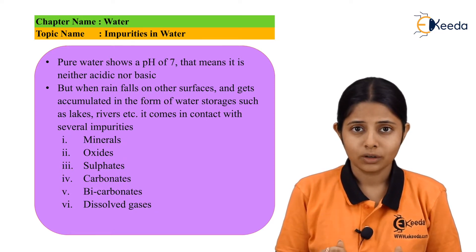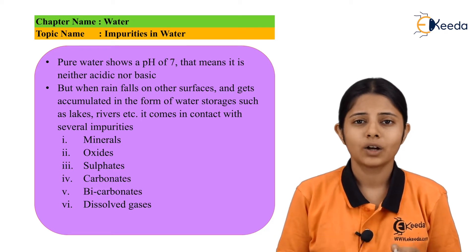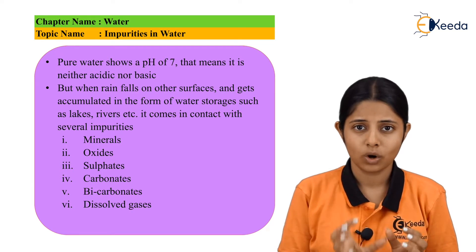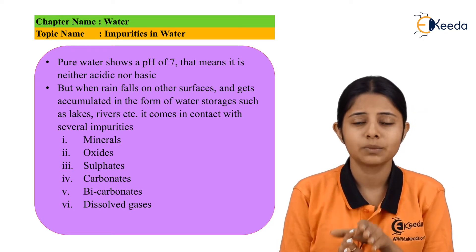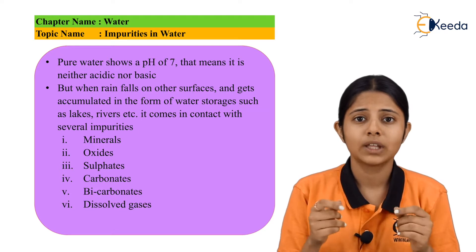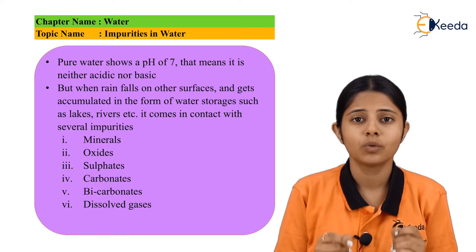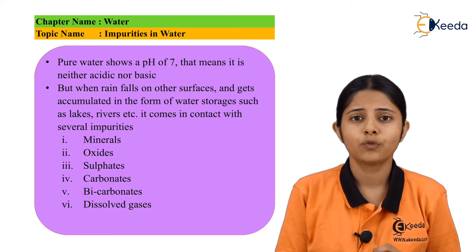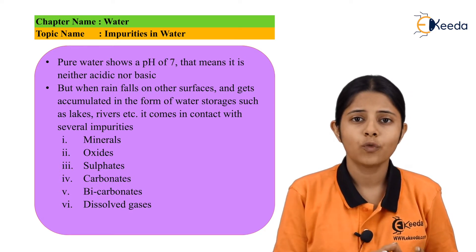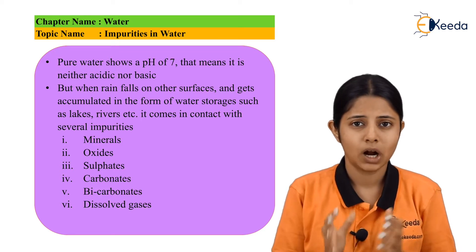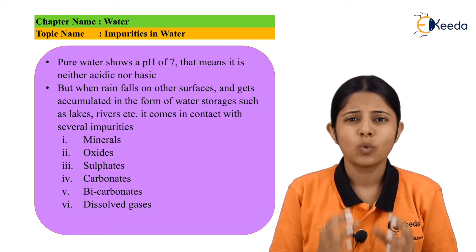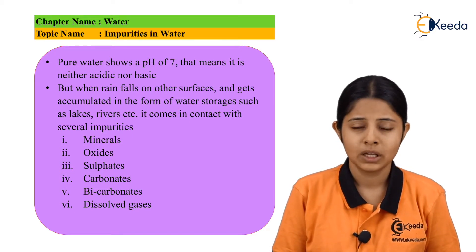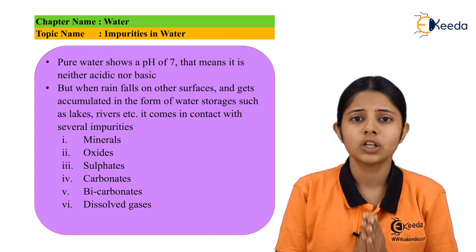This impure water can also be termed as hard water. Now what exactly is hard water? Hard water is water which contains impurities and minerals, and because of those minerals, the properties of the water change. One of the most important properties that changes is the foaming of soap. Soft water foams up or lathers soap, but hard water cannot do that, because of certain impurities and minerals present in it.